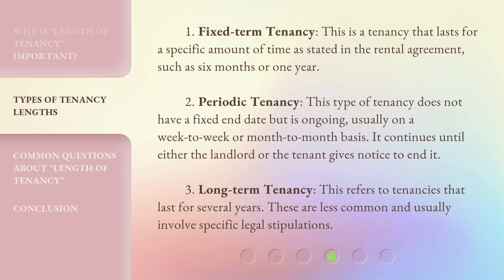There are three main types of tenancy. 1. Fixed-term tenancy: a tenancy that lasts for a specific amount of time as stated in the rental agreement, such as six months or one year. 2. Periodic tenancy: this type does not have a fixed end date but is ongoing, usually on a week-to-week or month-to-month basis, continuing until either the landlord or the tenant gives notice to end it. 3. Long-term tenancy: tenancies that last for several years, which are less common and usually involve specific legal stipulations.